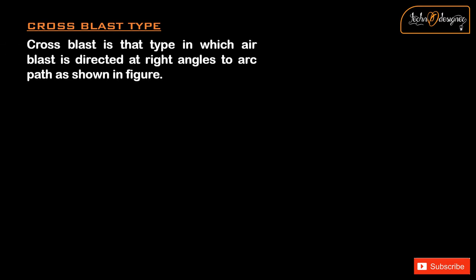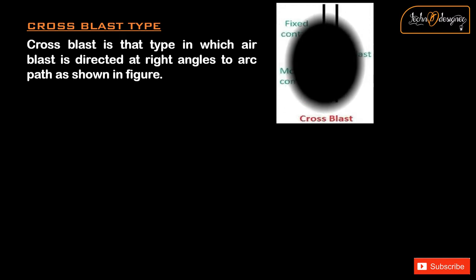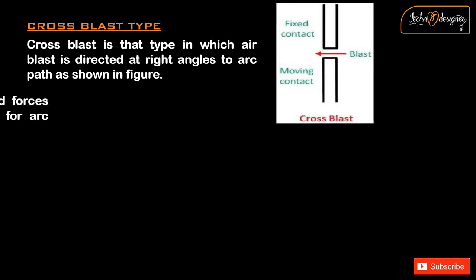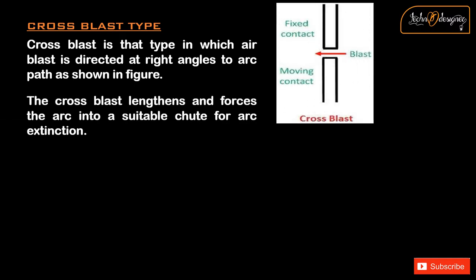Cross blast type is the type in which the airblast is directed at right angles to the arc path, as shown in the figure. The cross blast lengthens and forces the arc into a suitable chute for arc extinction.